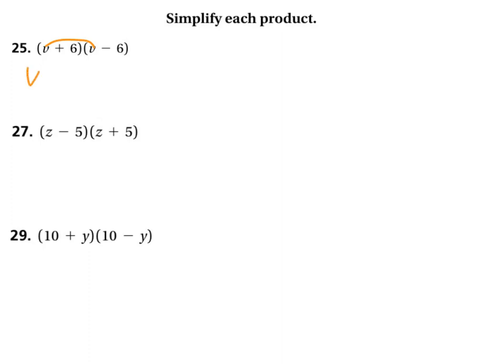Let's do the first times the first, v times v, v squared. Then let's do the outer, v times negative 6, negative 6v. Then let's do the inner, positive 6 times v, positive 6v. And then let's do the last, 6 times negative 6, negative 36.